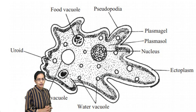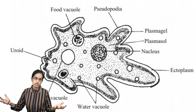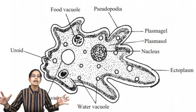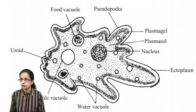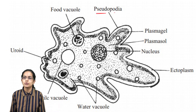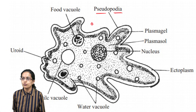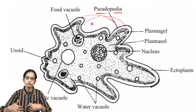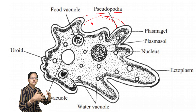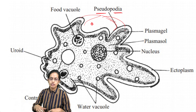The first is amoeba. Amoeba has an irregular shape — no well-defined shape. It has false legs known as pseudopodia. 'Pseudo' means false, 'podia' means legs. The pseudopodia would expand and engulf a food vacuole, and this process is known as phagocytosis, which is the engulfing of the food vacuole.